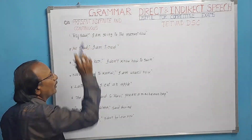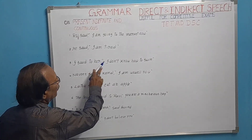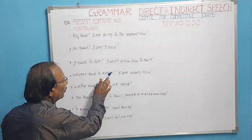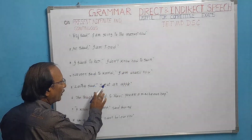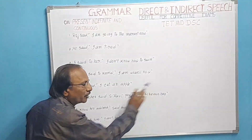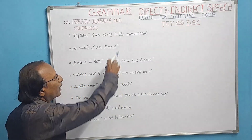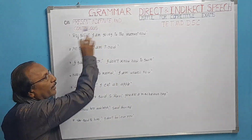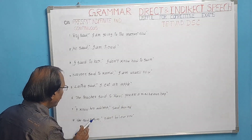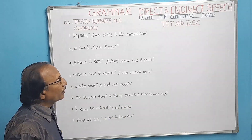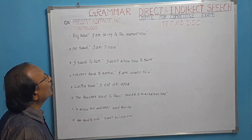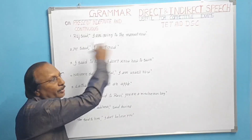The present indefinite sentences are: 'He said, I am tired.' 'I said to her, I don't know how to swim.' 'Naveen said to Kamal, I am unwell now.' 'Latha said, I eat an apple.' 'The teacher said to Ravi, you are a mischievous boy.' You don't find any continuous action in these. 'I know her address,' said Govind. 'She said to him, I don't believe you.' These are all present indefinite sentences.